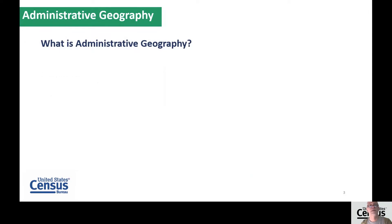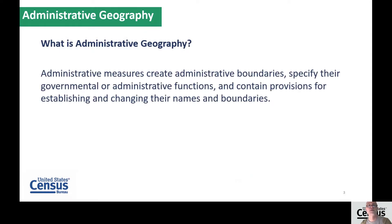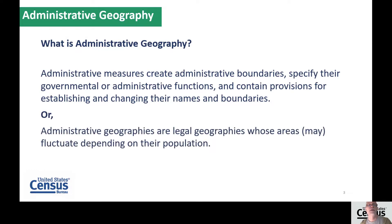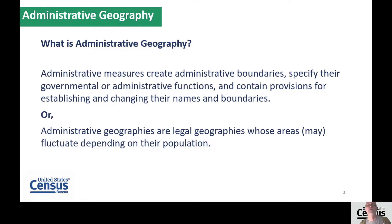So what is administrative geography? We have this definition: administrative measures create administrative boundaries, specify their governmental or administrative functions, and contain provisions for establishing and changing their names and boundaries. Administrative geographies are legal geographies whose areas may fluctuate depending on their population. We have chosen to pull these four geographies out and call them administrative geographies because their boundaries may indeed fluctuate over time because of their population.